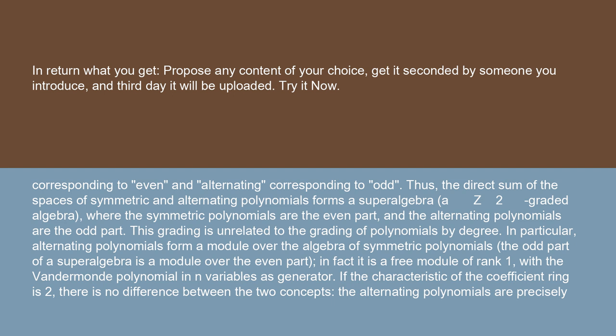This grading is unrelated to the grading of polynomials by degree. In particular, alternating polynomials form a module over the algebra of symmetric polynomials. The odd part of a superalgebra is a module over the even part. In fact, it is a free module of rank 1, with the Vandermonde polynomial in n variables as generator.